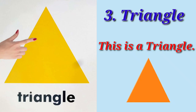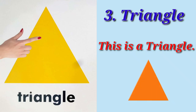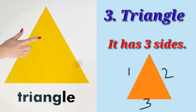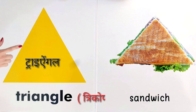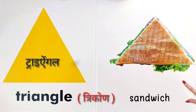Triangle. This is a triangle. It has three sides. Triangle means tricone. The shape of the sandwich is like a triangle.